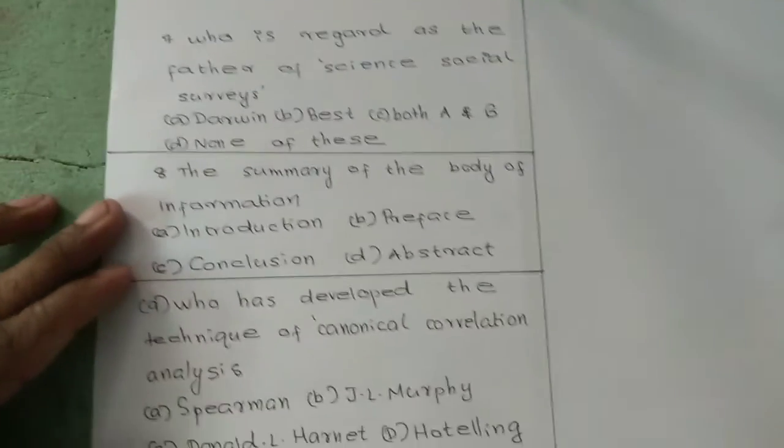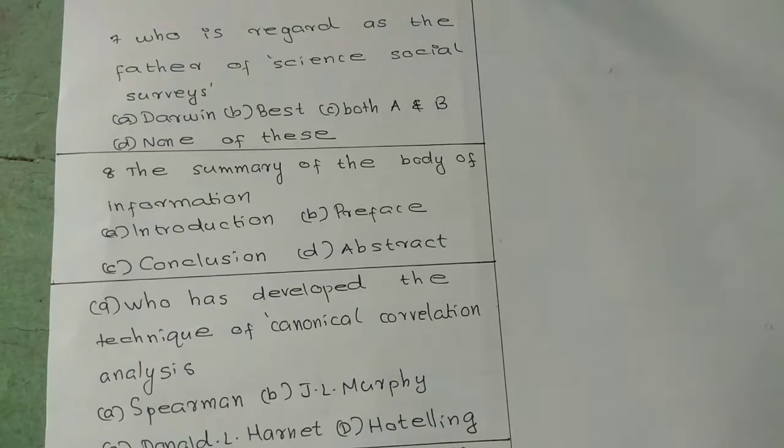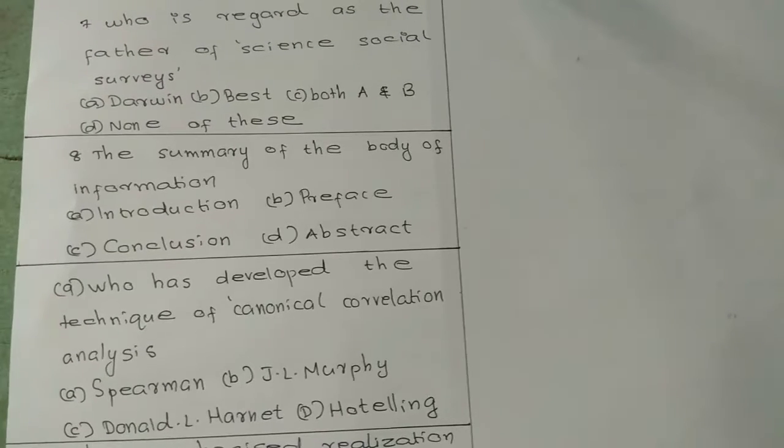Question 7: Who is regarded as the father of science social survey? Option A: Darwin. Option B: Best. Option C: both A and B. Option D: none of these.